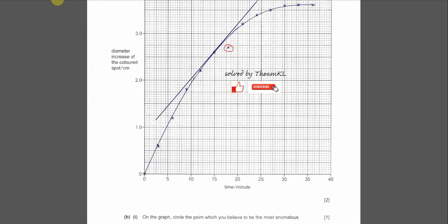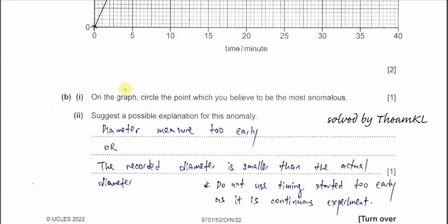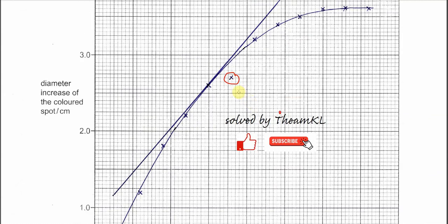Now let's start the question. For Part B1, on the graph, circle the point which you believe to be the most abnormal. I already told you, it's the one at 18 minutes.